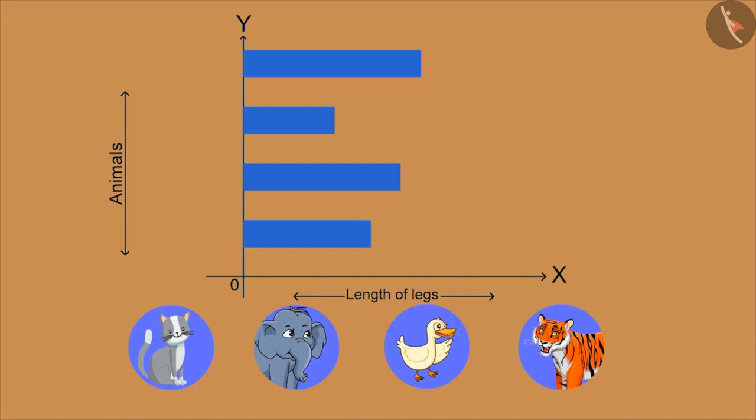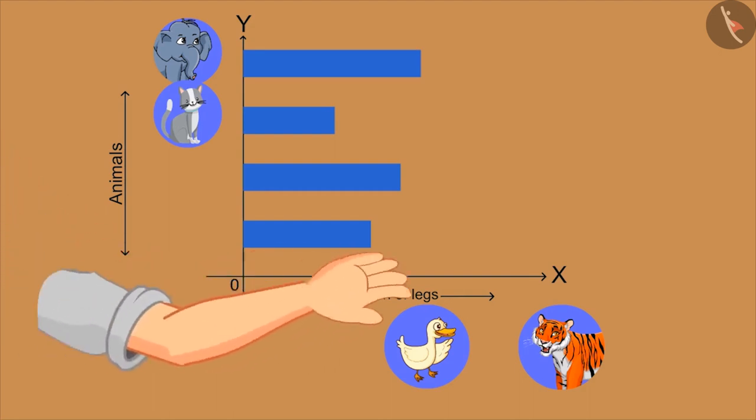Brother, let me do first! Yes, yes, very good! This one is of elephant! Very good! And this one is of duck!